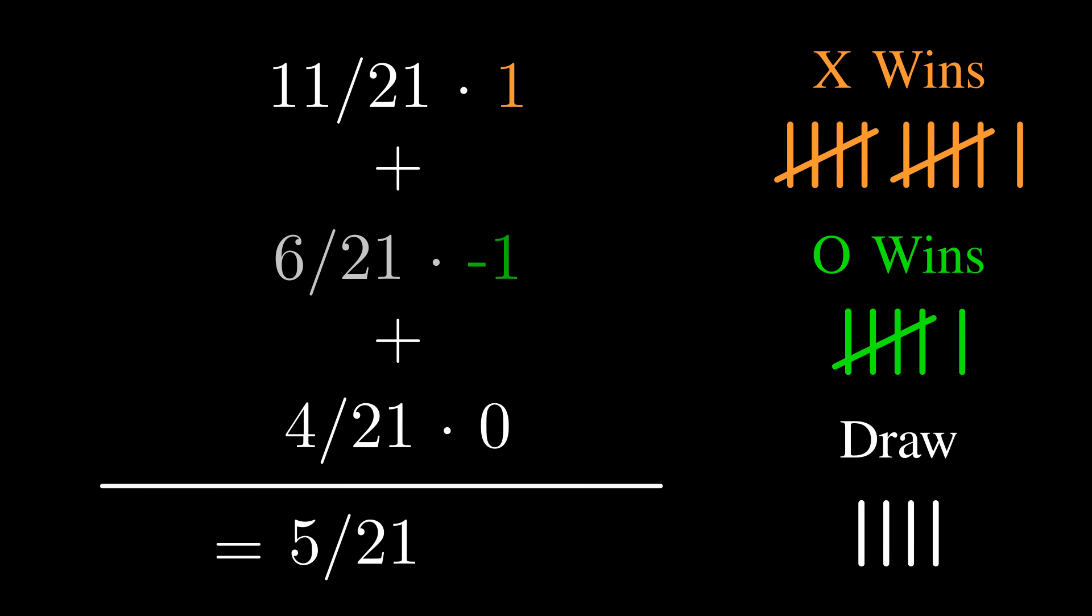Taking a weighted average of these scores, we get a value of 5 over 21, or roughly 0.238 for this board position, indicating that it's somewhat advantageous for X.